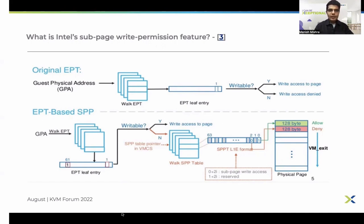In the normal or older workflow, there was just GFN-level write protection: you could unset the write bit in the L1 entry of EPT page tables and enable write protection on the full page. But with SPP support, you can enable sub-page level protection for any GFN by marking the SPP bit along with unsetting the write bit in EPT. Then you can control sub-page level access by setting or unsetting access bits for every sub-page in the L1 entry of SPPT. SPP protection works only with 4K pages — if you have large-space mappings, you first need to break those and then enable SPP protection.